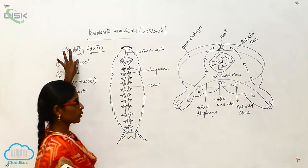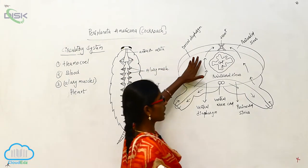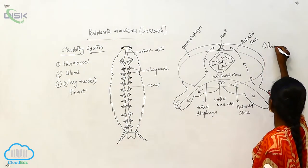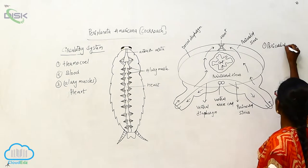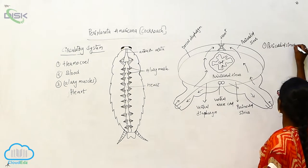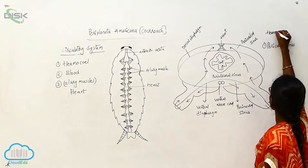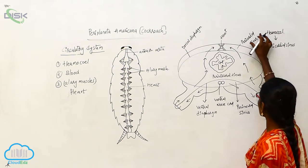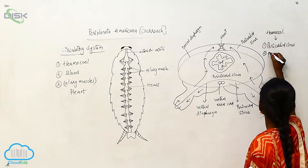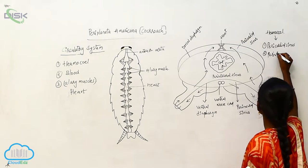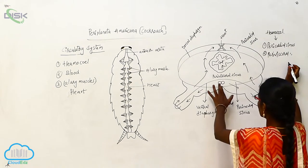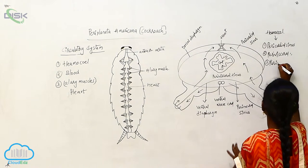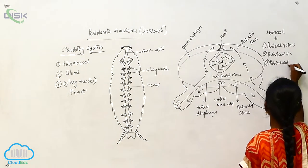The hemocele divides into three types: the first is pericardial sinus, the second is perivisceral sinus, and the third is perineural sinus.